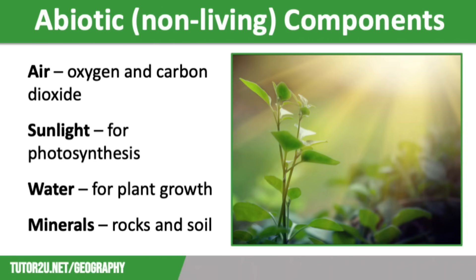The biotic components in an ecosystem are dependent on a number of abiotic factors. These are air — so we're talking here about oxygen needed for respiration and carbon dioxide needed in the process of photosynthesis. Living components also need sunlight, which is needed for photosynthesis and plant growth, as well as water, which is needed for plant growth but also as a drinking source.